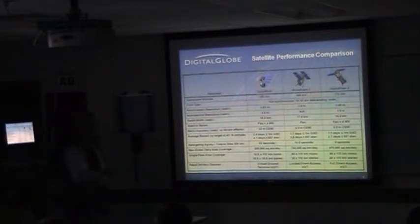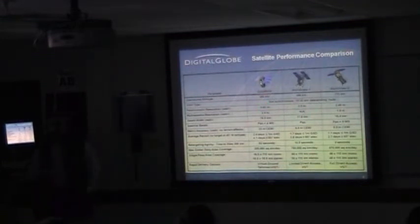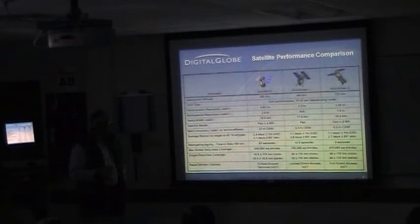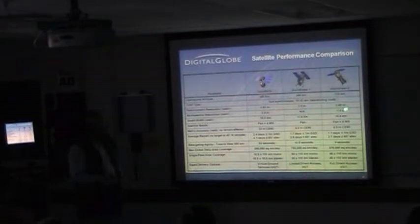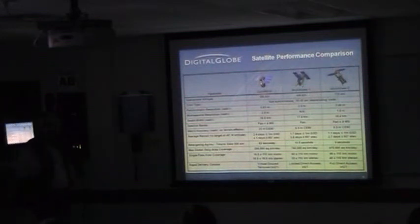We take both black-and-white and color imagery. We use the higher-resolution panchromatic data to sharpen the color data. The swath width — unlike your digital camera which just takes a picture — runs big lines across the ground: literally 16 to 17 kilometer swath widths in a line mode. You'd watch a line go across the screen rather than a snap getting an area.